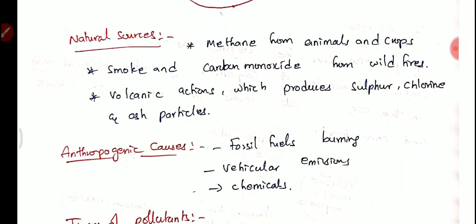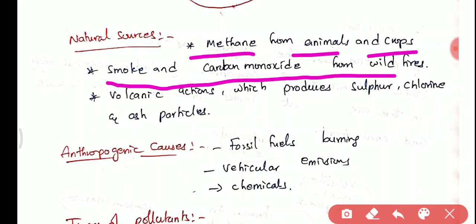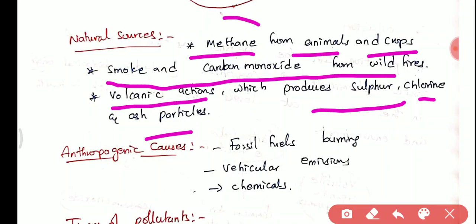There are also natural sources of air pollution. Agriculture releases methane from animals and crops. Smoke and carbon monoxide come from wildfires. Volcanic action releases sulfur, chlorine, and ash particles. All these components coming from volcanic eruptions also cause air pollution.